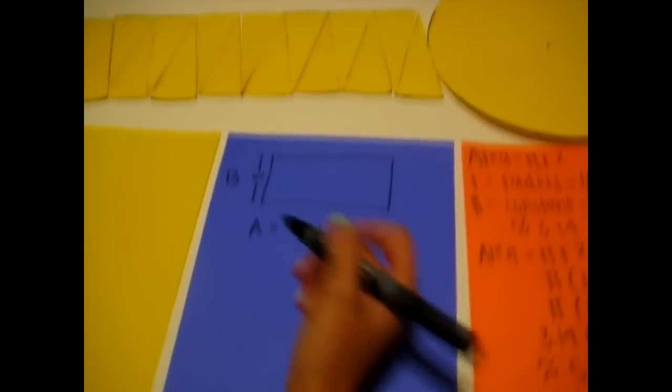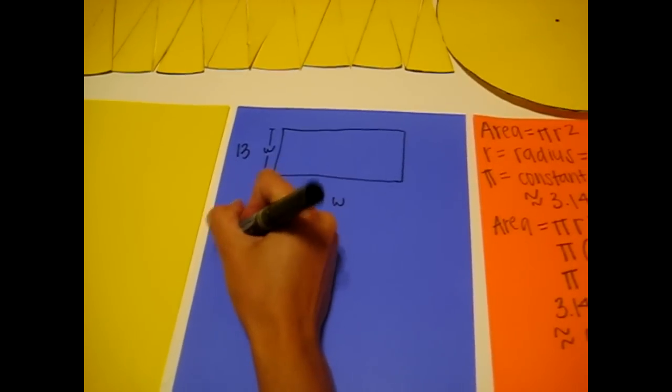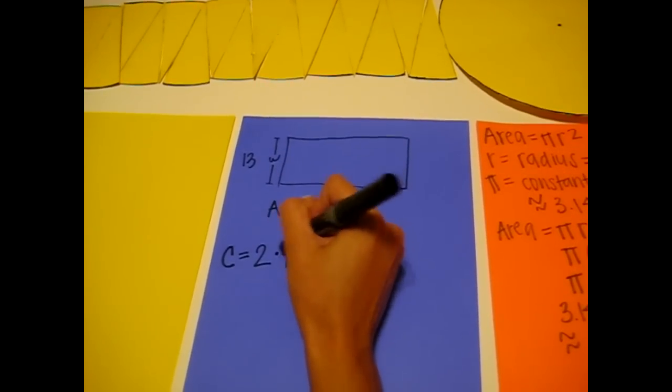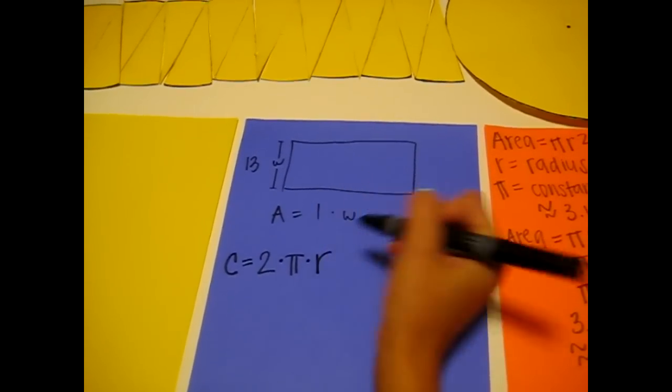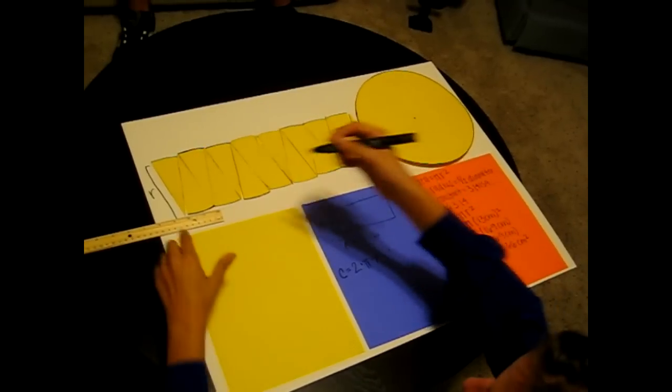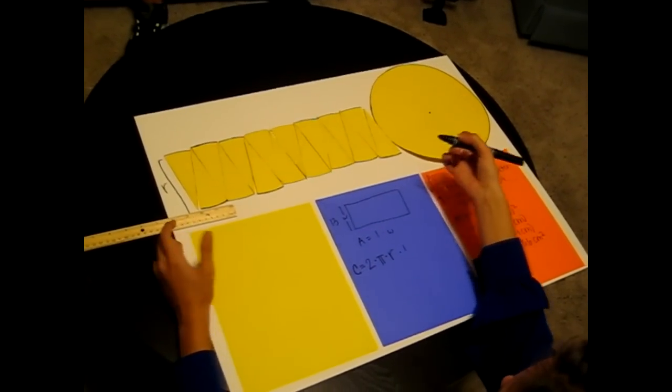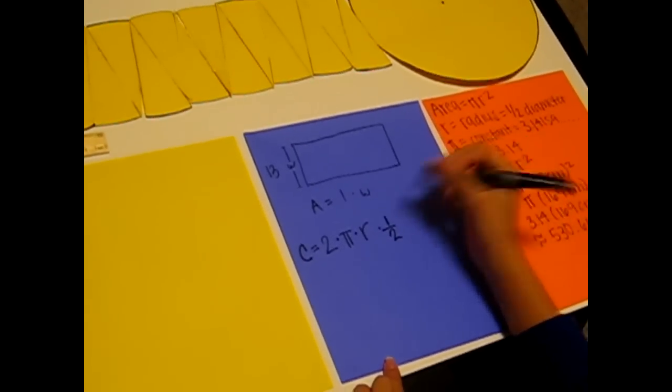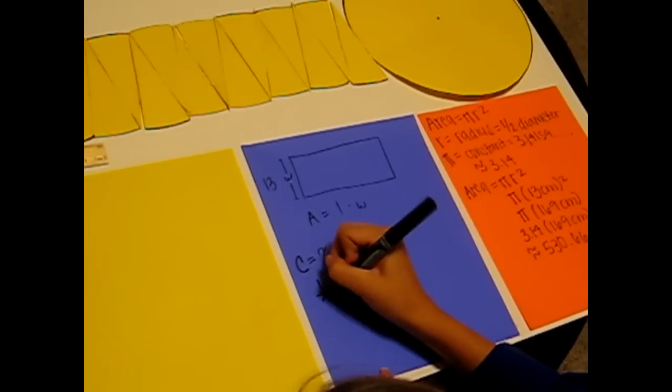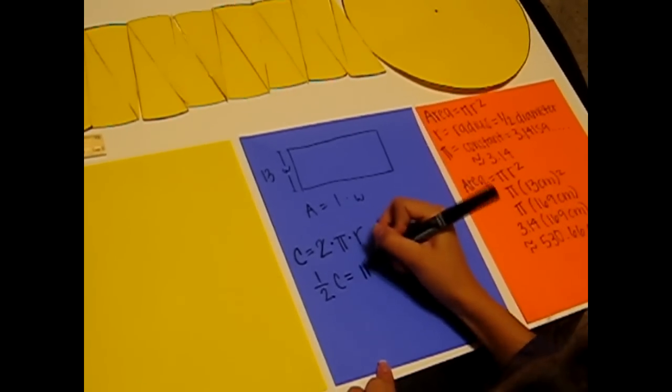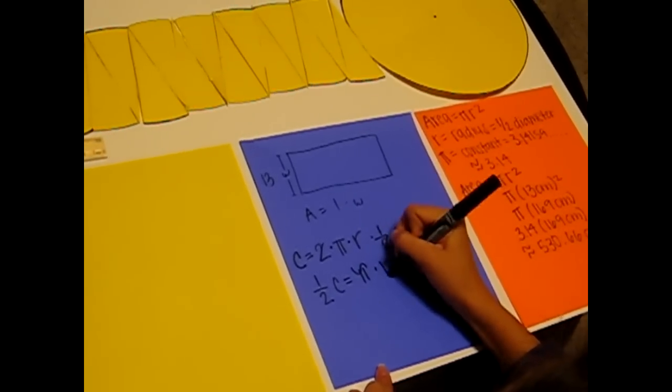And as we learned in previous lessons, the circumference of a circle is equal to 2 times pi times r. Since we know the length of our rectangle is equal to half of the circle's edges, we need to multiply our formula by 1 half. When we do this, we can cancel our 2's, and 1 half of the circumference is going to equal pi times r.